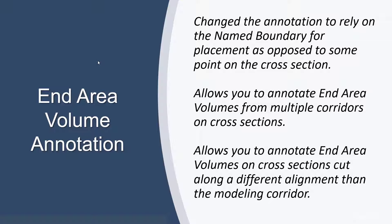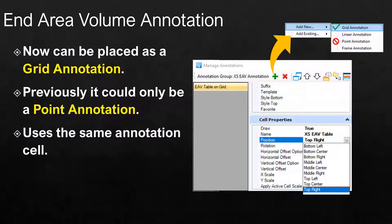What we've done here is we've tied it to the grid as opposed to the point. This allows you to annotate end area volumes in multiple complex situations, such as multiple corridors on cross-sections, or cross-sections cut along a different alignment than the modeling corridor.